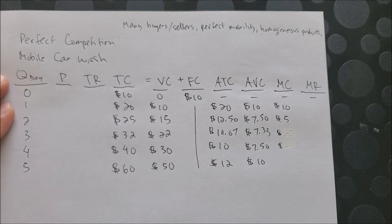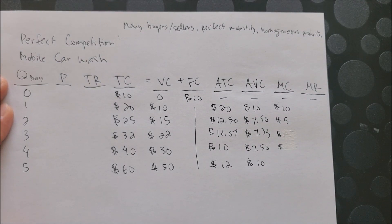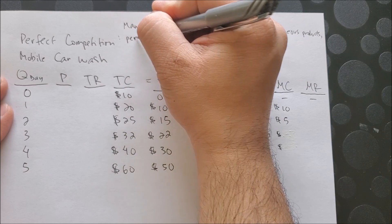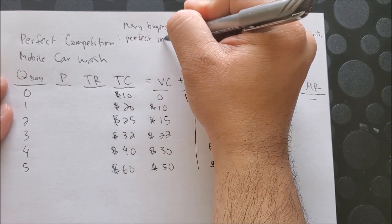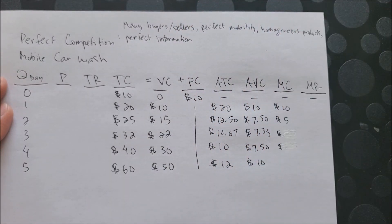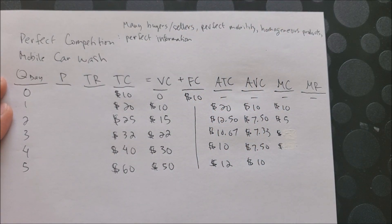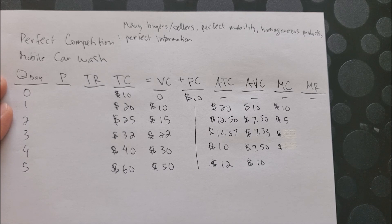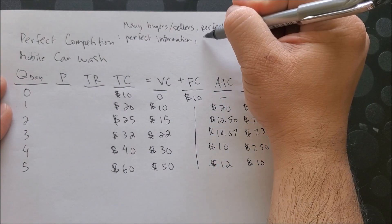At the same time, we know that you as a consumer have what we call perfect information. You know exactly what the price of a good is, and if the producer is trying to dupe you over or sell a good for a higher price, you know exactly to exit the market because you have perfect information for the consumer.